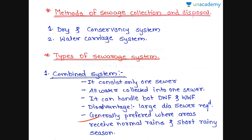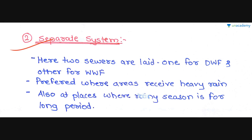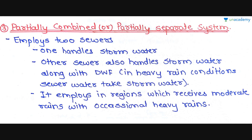The combined system is generally preferred where areas receive normal rains and a short rainy season, because if rainfall is very heavy the load on one sewer increases and the combined system cannot handle it. The next type is the separate system, where two sewers are laid — one for dry weather flow and one for wet weather flow. It is generally preferred where areas receive heavy rains or have a long rainy season, as the load is distributed between the two sewer lines.